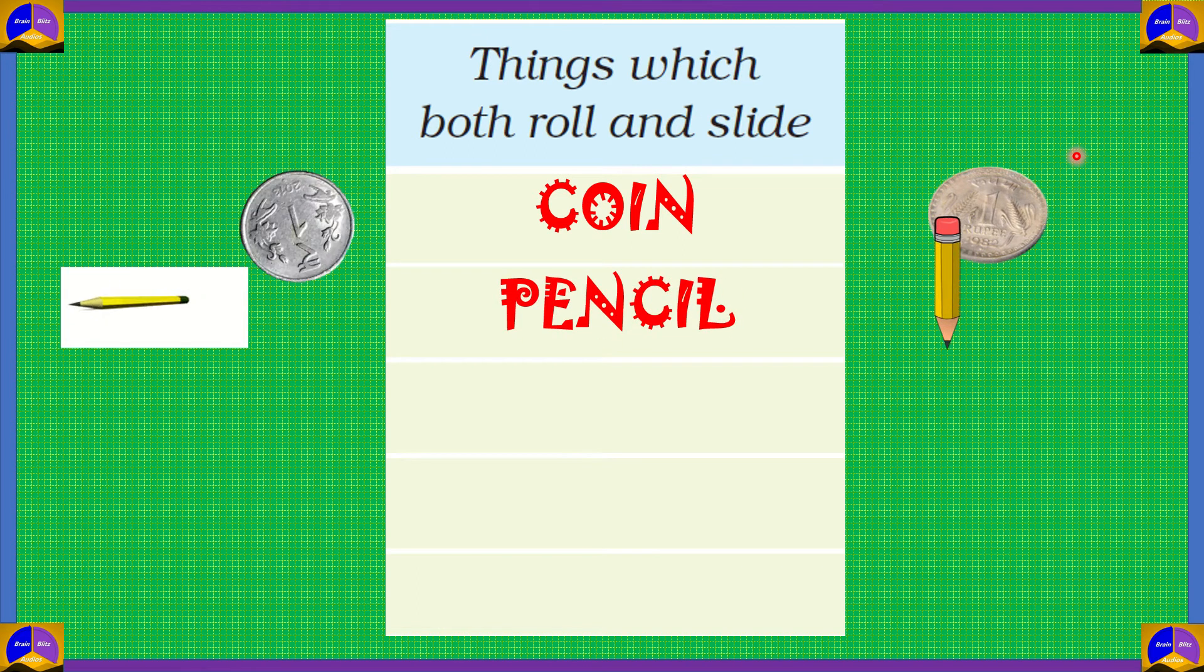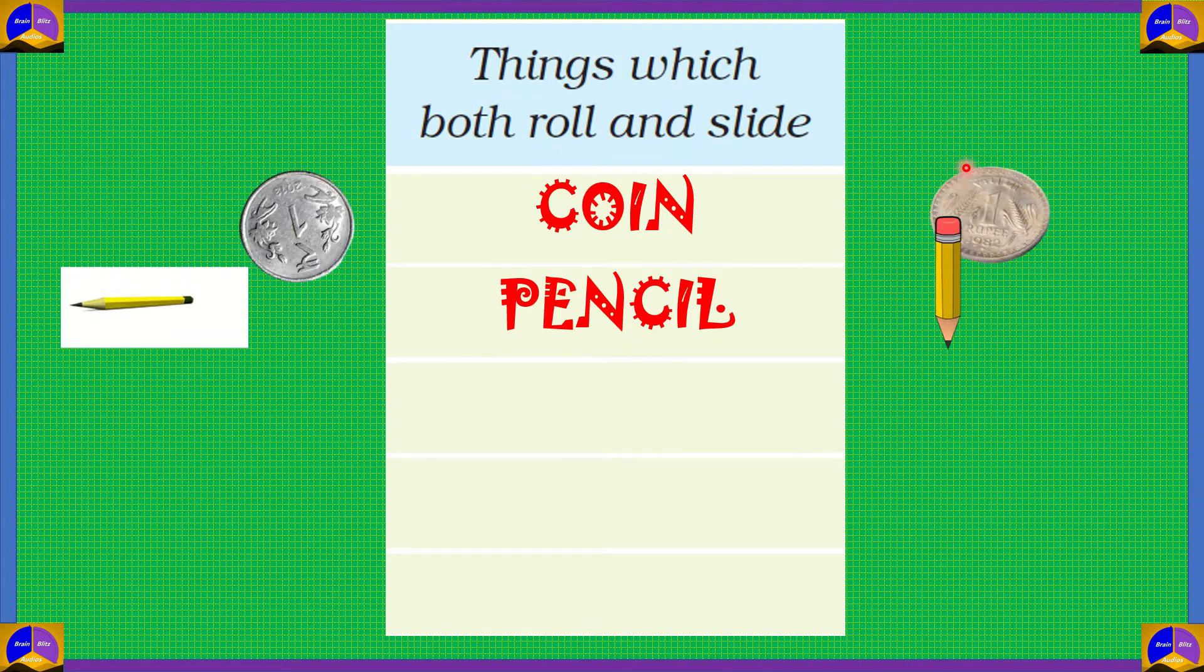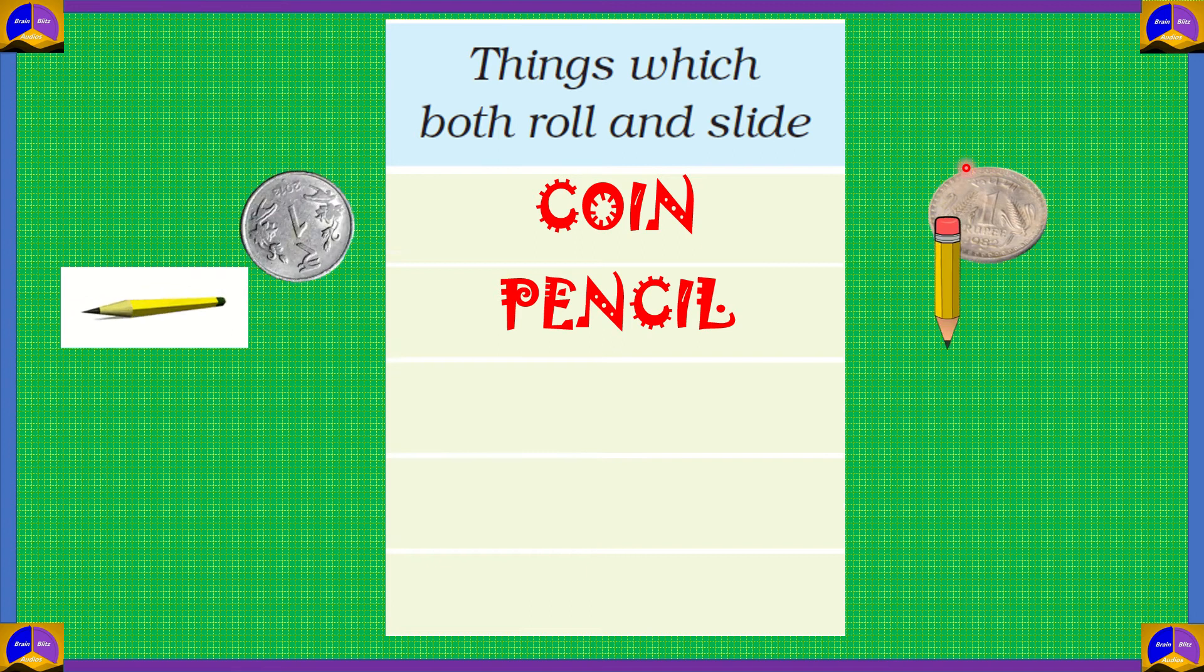Then, we have a pencil. A pencil, if you push it in the normal position, then it would roll. But when you are writing, it doesn't roll. It slides. If you draw a big line.